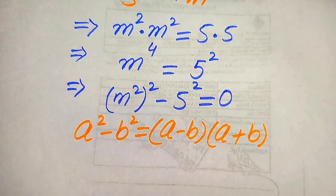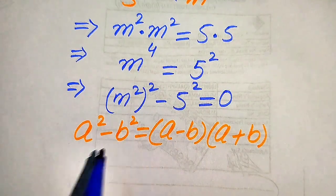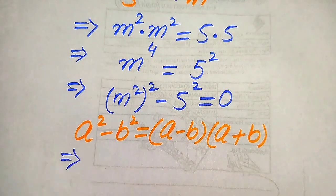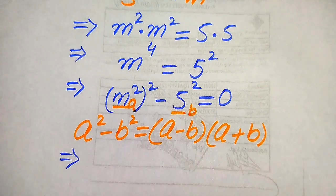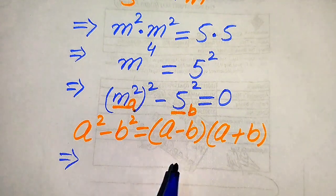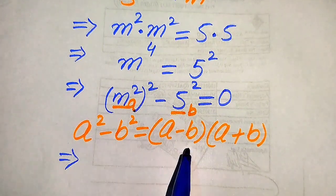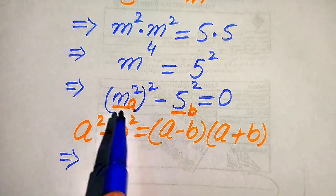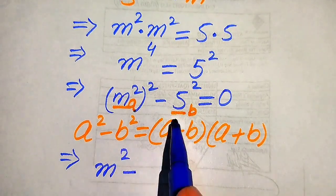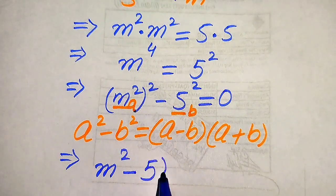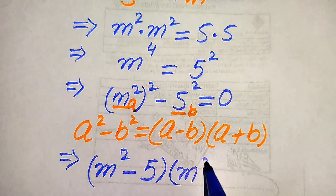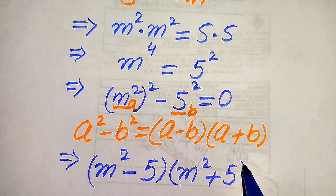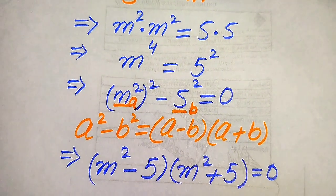According to this algebraic formula, we write the left hand side of the above equation in factored form, because m square is our a and 5 is our b. We substitute the values of a and b into the right hand side of this formula, giving us m square minus 5, times m square plus 5, equals 0.